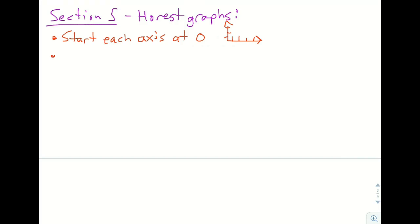The next one is evenly spaced numbers on the axes. What that means is when you count, if you're counting by 20s, it means 20, 40, 60, 80, 100, and so forth.